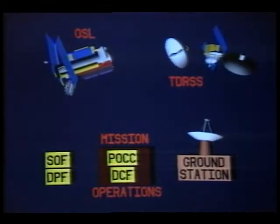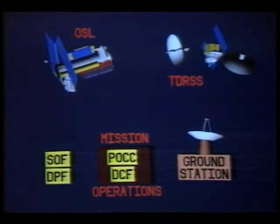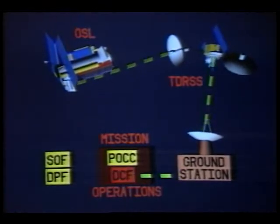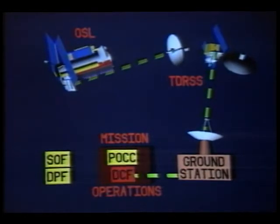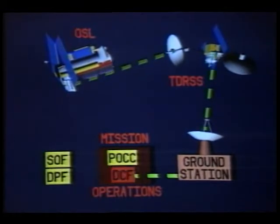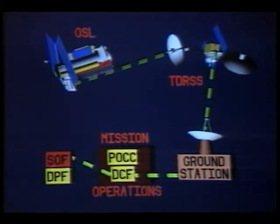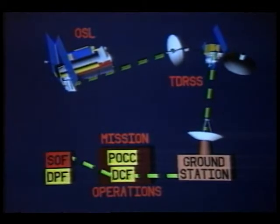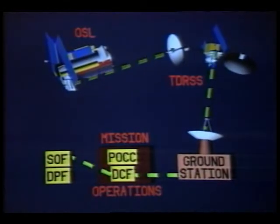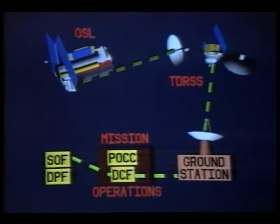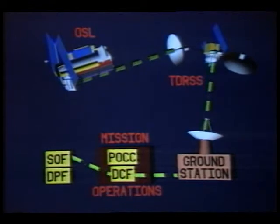During these real-time telemetry sessions, data from OSL is received at the Data Capture Facility, DCF, at the Goddard Space Flight Center. All raw data is recorded on high-density digital recorders. It is processed to level zero and forwarded to the Science Operations Facility, SOF, in near enough real-time. Because the OSL is using NASA's standard telepacketization formats and protocols, the NASA communications network can easily handle it within their institutional ground system capabilities.